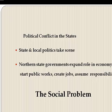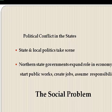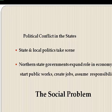After the Civil War, northern state governments began to expand their role in the economy by launching massive public works programs, creating jobs, and assuming more responsibility for public health, education, and welfare. Third parties experienced some success but not lasting — the Greenback Labor Party proposed that the federal government keep all greenbacks in circulation, giving the government control over the money supply, and led to some changes in the 1870s.